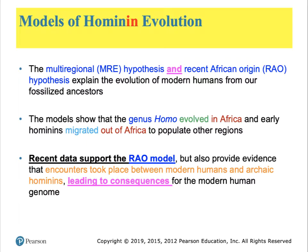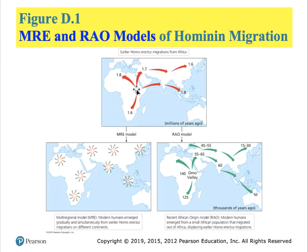The current two leading theories about the origins of modern humans are the multi-regional hypothesis (MRE) and the African origin hypothesis, which has now been modified with the word 'recent' to differentiate it from another hypothesis that has lost favor. Both these leading hypotheses agree that humans, Homo, evolved in Africa. The debate pertains to when these migrations took place and how many waves of migrations actually occurred.